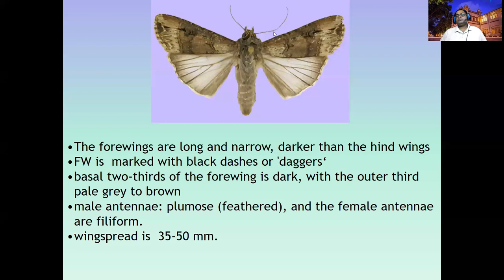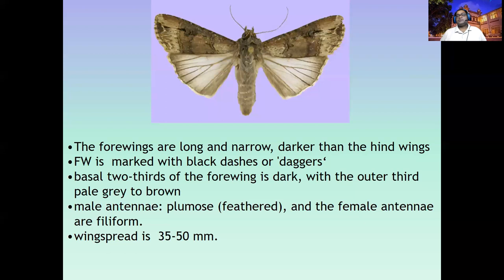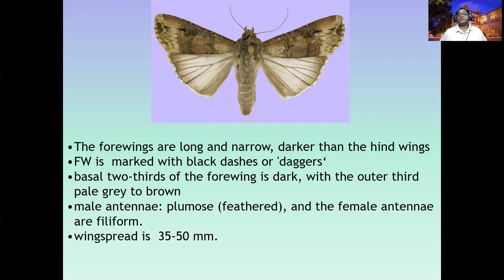There is sexual polymorphism in the antennae: the female has filiform antennae, while the male has plumose antennae — like a mosquito. You can refer to your entomology notes for the different types of antennae studied for different insect groups. The wingspan is nearly up to five centimeters, or 50 millimeters, which gives you an idea of how large this moth is.